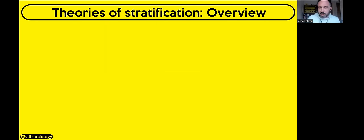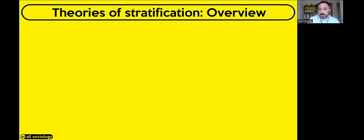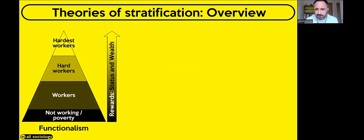So, theories of stratification — an overview. In this slide I'm going to take you through the Functionalist view, the Marxist view, and also the Feminist view in terms of how they see society as stratified. Just to remind you from last video: stratification means the layering of people in a hierarchy or ordering in society. Let's look at the Functionalist view first.